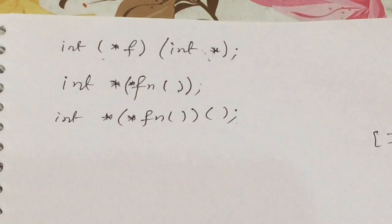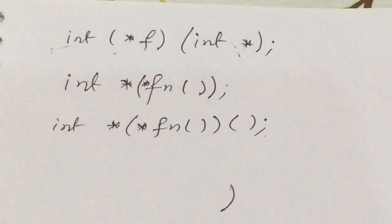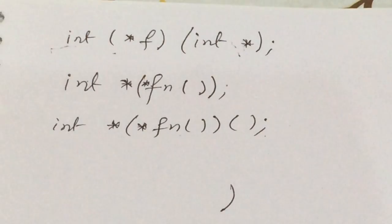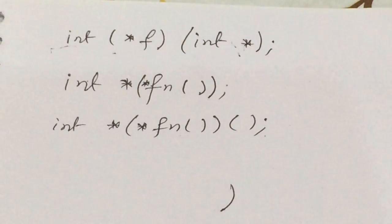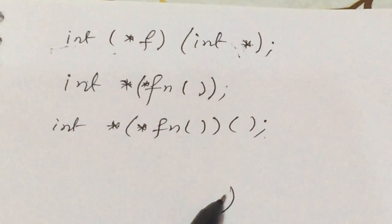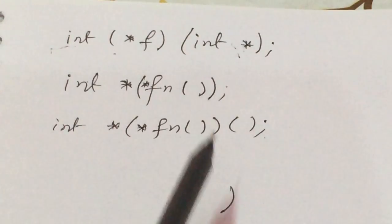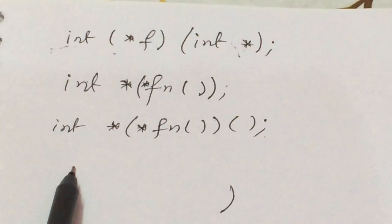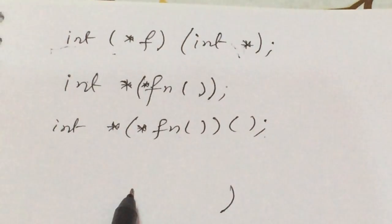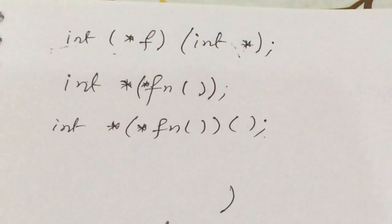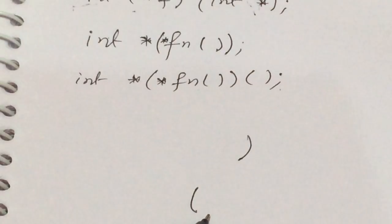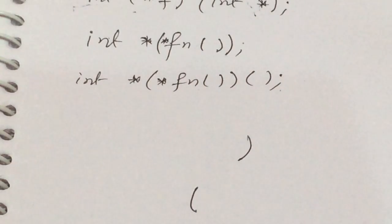Now proceed in this manner: it is always scanned from left to right. After finding the identifier, we always go to the right side of the identifier until we find a right parenthesis. After finding the right parenthesis, we go back to the left of the identifier until we get a left parenthesis or a data type, or until we run out of symbols.